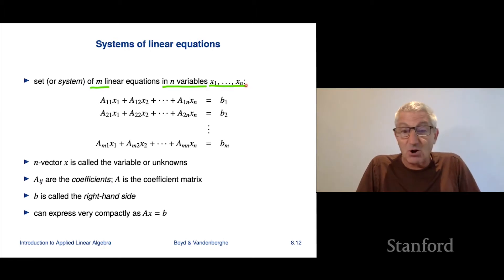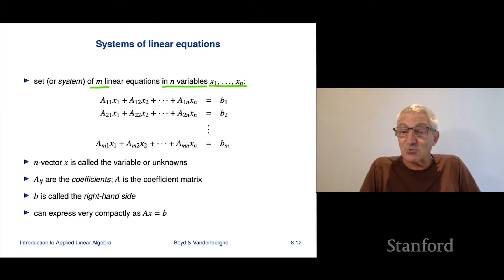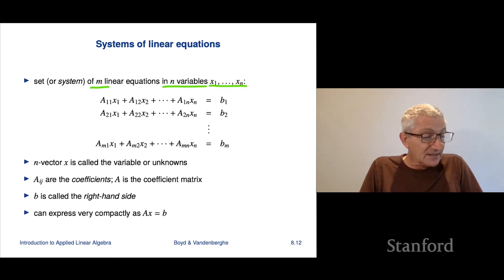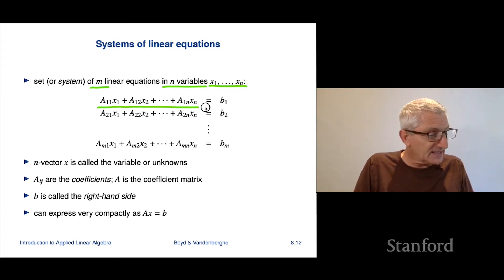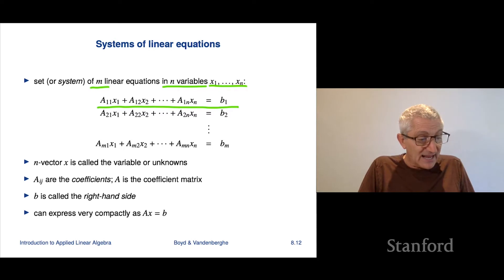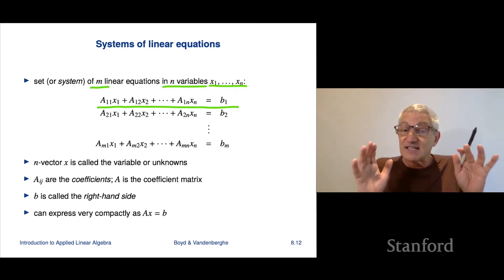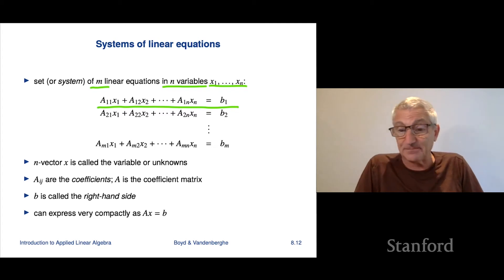The variables are called, by tradition, x1 up to xn, and there are m equations. Each equation looks like this: a set of coefficients — A11·x1 plus A12·x2 up to A1n·xn equals b1. That is one scalar linear equation.